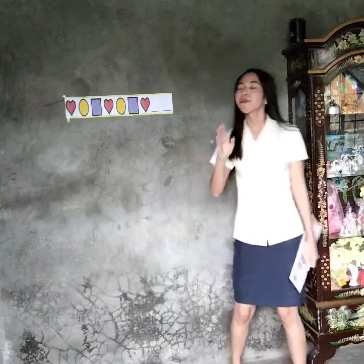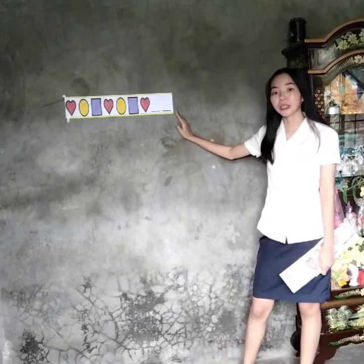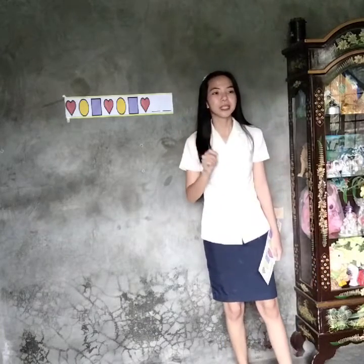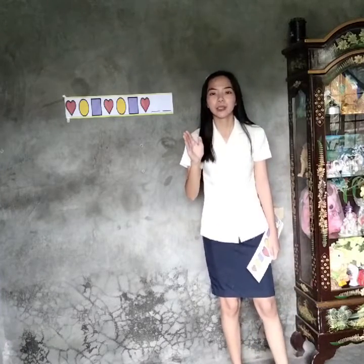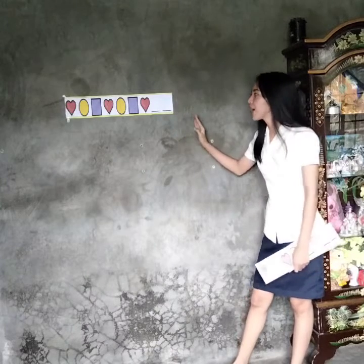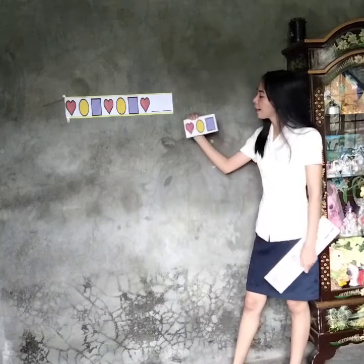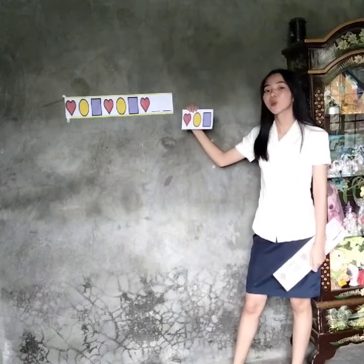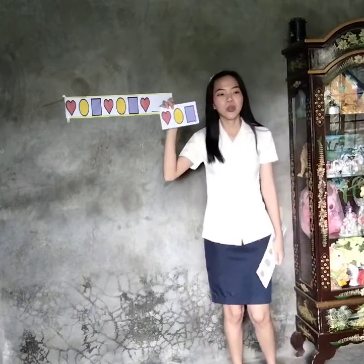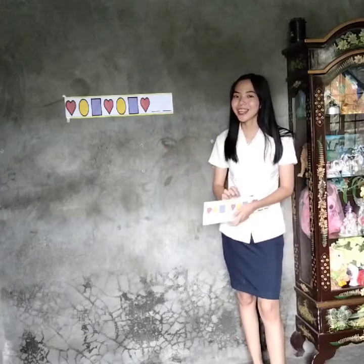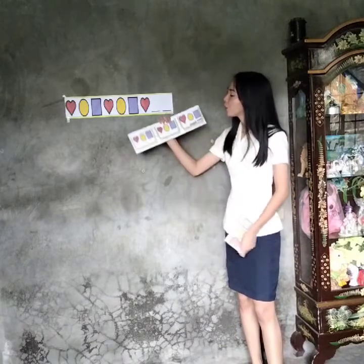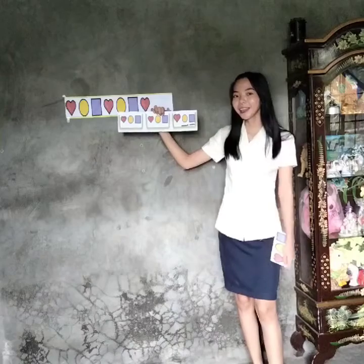Sometimes we may need to find the unknown terms in the pattern. Can you find the next two terms of this pattern? To find the unknown terms in the pattern, first find the pattern's core, and then use the core to find the unknown terms. Let's try on this one. The core of this pattern are heart, circle, and square. Now let's use it to find the next two terms. The unknown terms are circle and square.